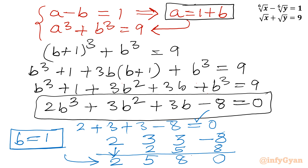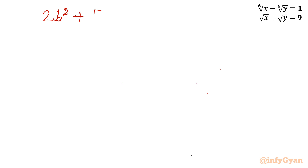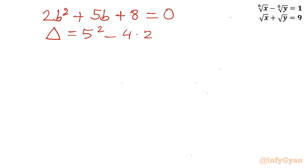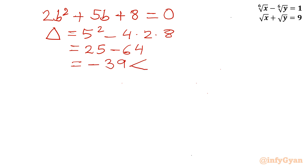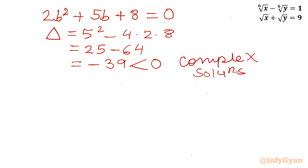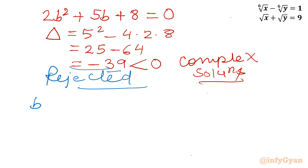This gives us one quadratic from which we get the other two solutions. The quadratic is 2b² plus 5b plus 8 equals 0. Calculating the discriminant: b² minus 4ac equals 5² minus 4×2×8, which is 25 minus 64, giving minus 39 — negative. Because the discriminant is negative, we get complex solutions, so we reject this quadratic for our real solution calculation. The solution b equals 1 is accepted.